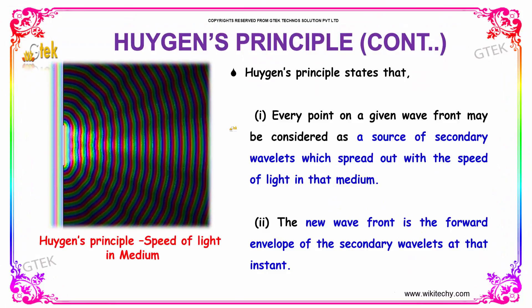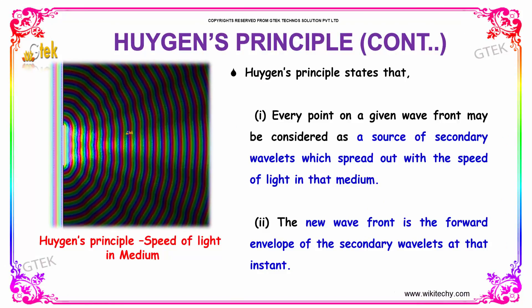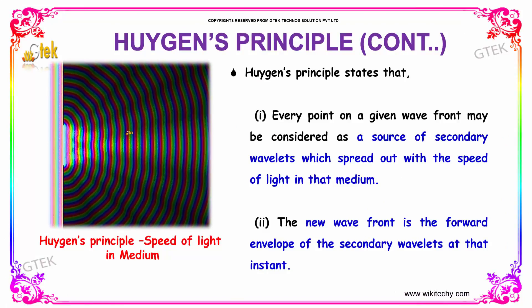Huygens principle states that every point of a given wavefront may be considered as a source for the secondary wavelets, which spread out with the speed of light in that medium. The new wavefront is a forward envelope of the secondary wavelets at that instant.